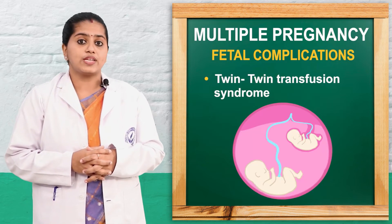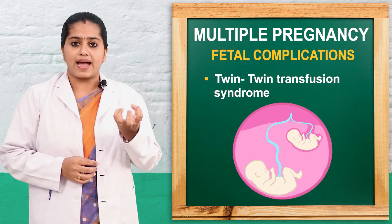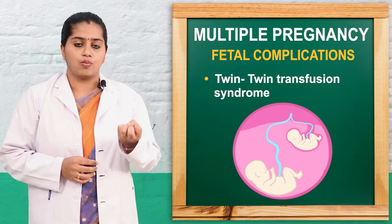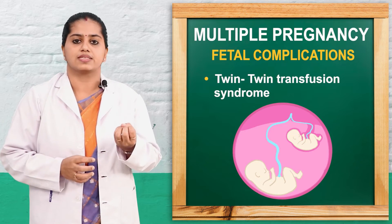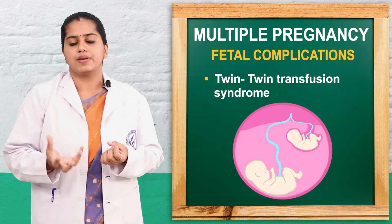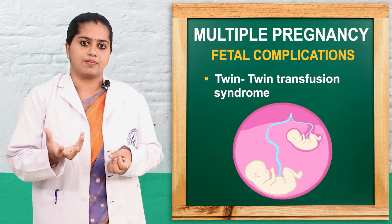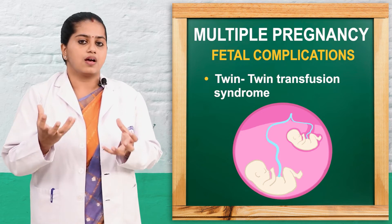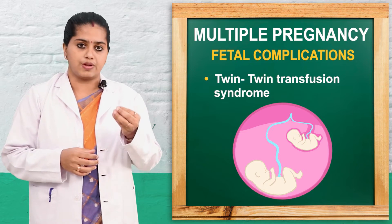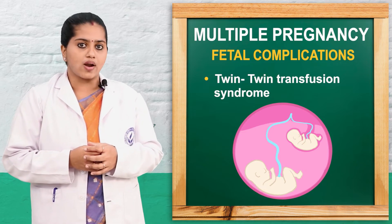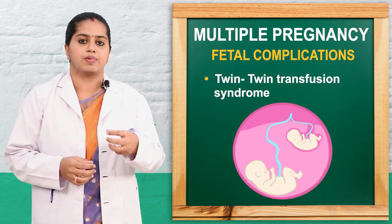Another complication is twin-to-twin transfusion syndrome. The donor twin will be anemic, low birth weight, and hypovolemic with oligohydramnios. The recipient twin will be hypervolemic, polycythemic, and have polyhydramnios. Birth weight difference between the twins is called discordant weight — one fetus is less weight, the other is more weight.